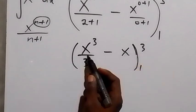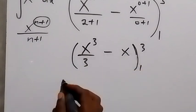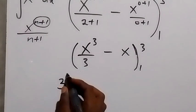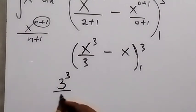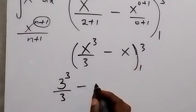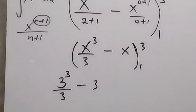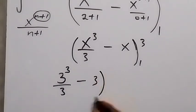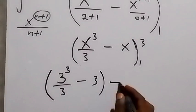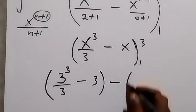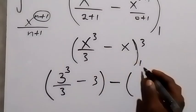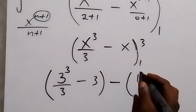It will be 3 raised to power 3 over 3, then minus 3. We have substituted the upper limit. Then minus, substituting the lower limit now, so anywhere you see x we put the lower limit: 1 raised to power 3 over 3, then minus 1.